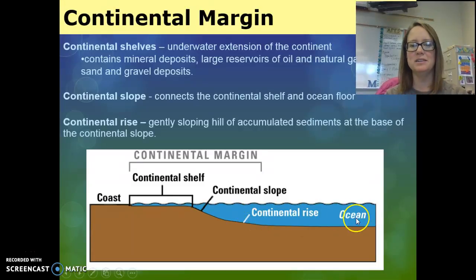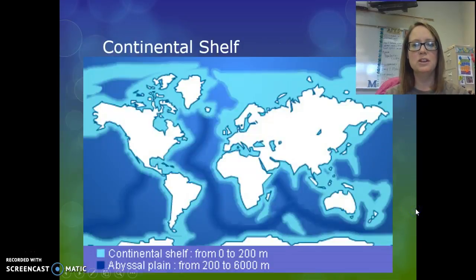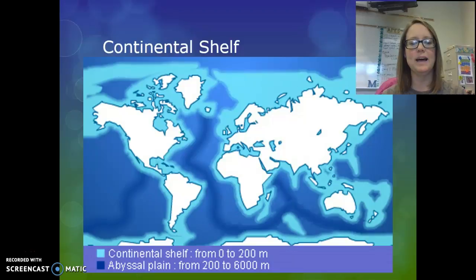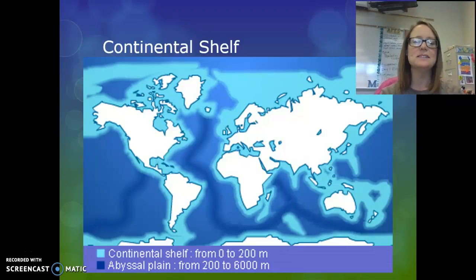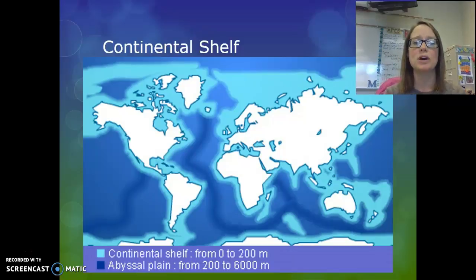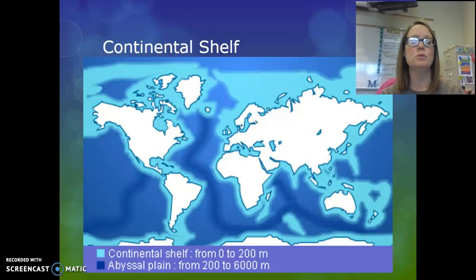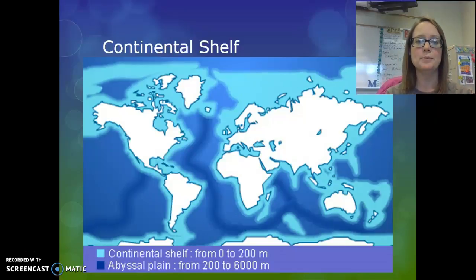Once you get past the continental rise, you're in the open ocean. Looking at this map, you can see the continental shelf in light blue where it extends out from the continents. This is the area that's exposed during an ice age when the seawater retreats, and then as sea levels rise during global warming, the continental shelf extends further out.